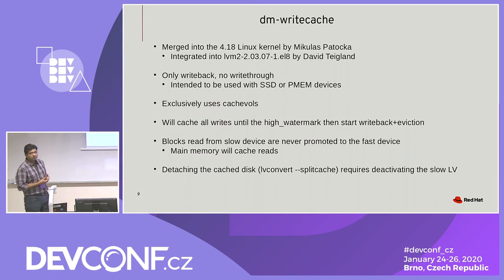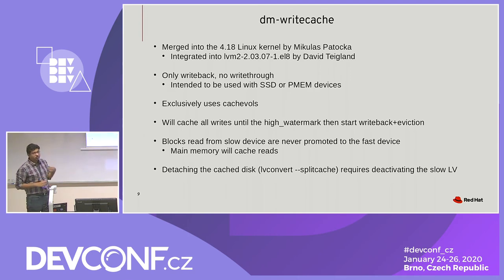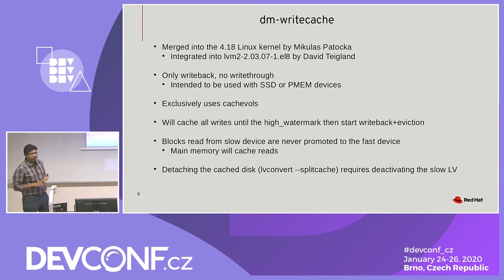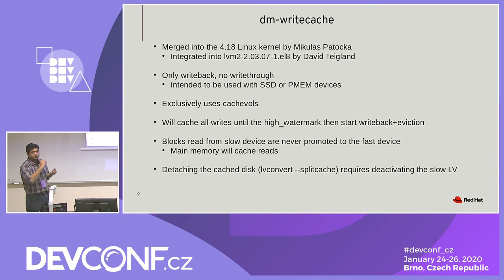DM write cache is the new caching target, merged into kernel 4.18 by Mikulas. It was recently integrated by David into an LVM version that will go into the next major release of RHEL. DM write cache is only write back — no write through — and that makes sense because we are trying to accelerate only writes. It's useful for applications like databases which need low commit latencies for transactional consistency and cannot afford to have data lying around in the page cache. It's optimized for persistent memory (PMM) devices in terms of flush frequency, but is also very useful for NVMe-based SSD devices.